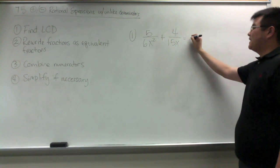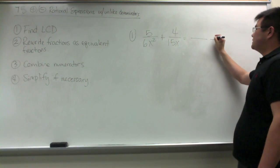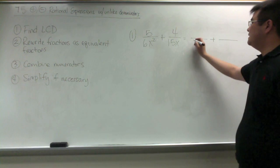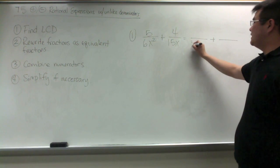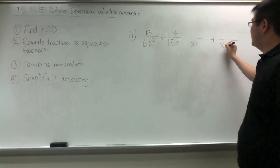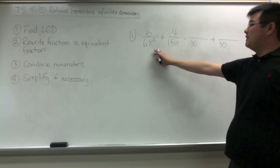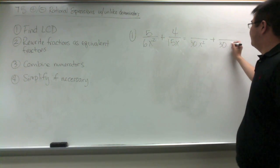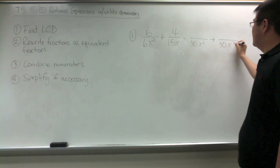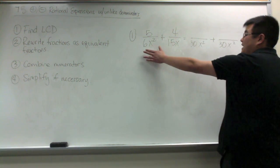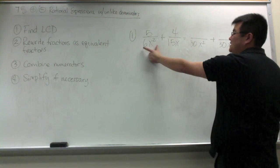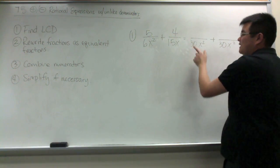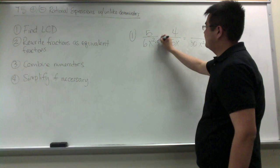In our first example, we're going to find the LCD first. The LCD between 6 and 15 is 30, and the LCD between x squared and x is x squared. Now we're going to rewrite the first fraction as an equivalent fraction. What times 6x squared would give me 30x squared? That would be 5.